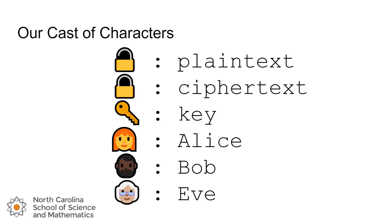We're going to have a certain cast of characters. We'll represent plain text messages with the open lock, cipher text messages with a closed lock, the key with a key, and then we've got three people: Alice, Bob, and Eve. Alice and Bob are two friends trying to exchange messages securely, and then there's Eve, who will be our eavesdropper, trying to determine that plain text message by eavesdropping on the communications between Alice and Bob.